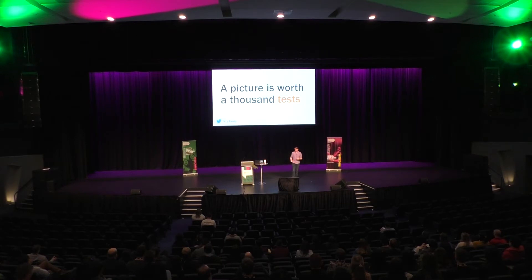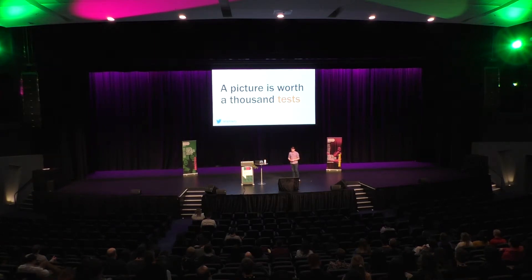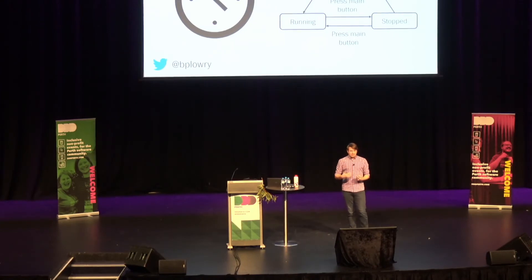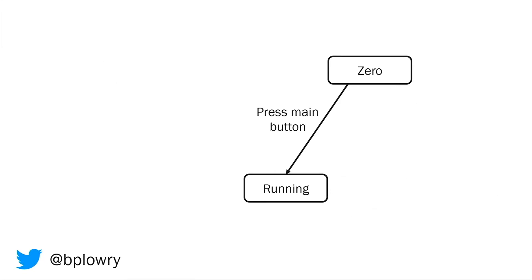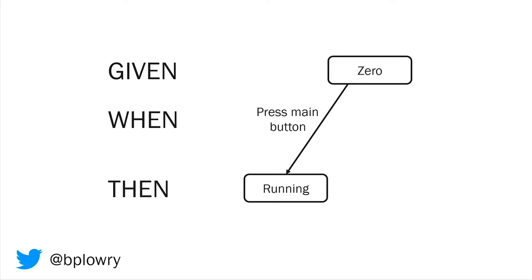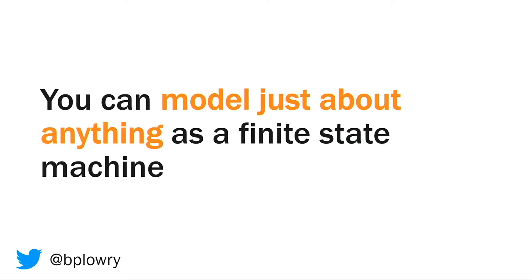We talk about how we want to bring testing forward and shift it left. If testing is really about giving us confidence in the products, then doing it as early as possible is the best thing we can do. Looking at one transition in isolation, you can see we've got a zero state as our initial state, you press a main button which is an action, and then a running state which is the final state. If you're familiar with BDD tests or given-when-then acceptance criteria, this is your given-when-then. All this diagram is, is those acceptance criteria drawn together and joined up.